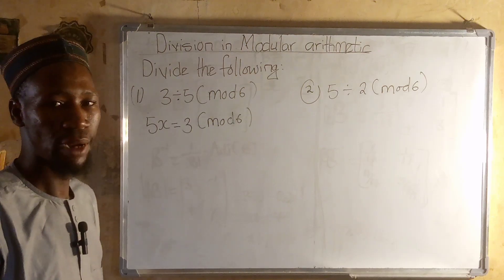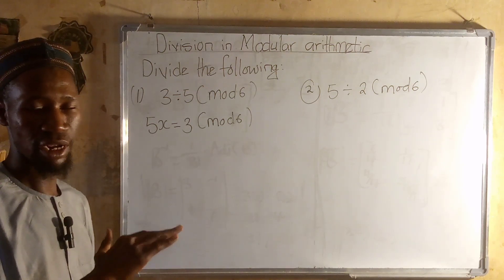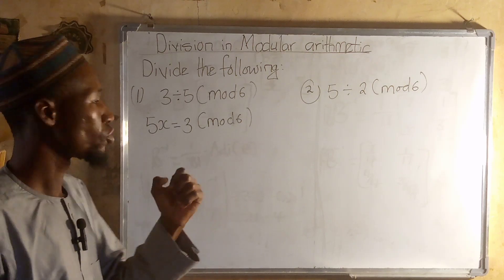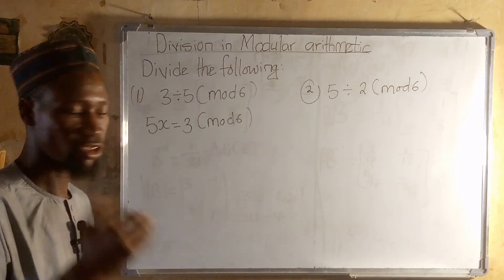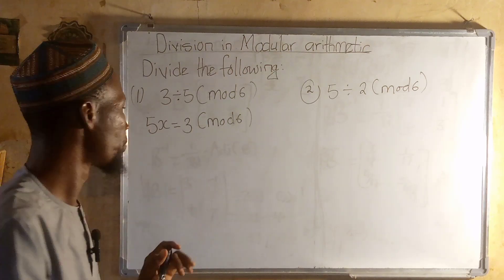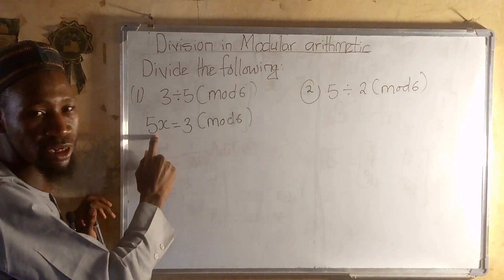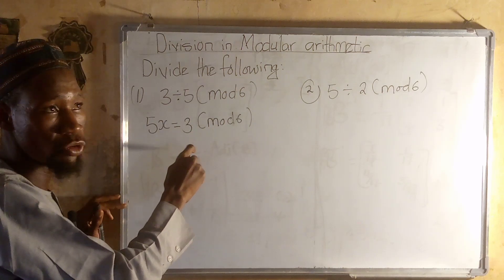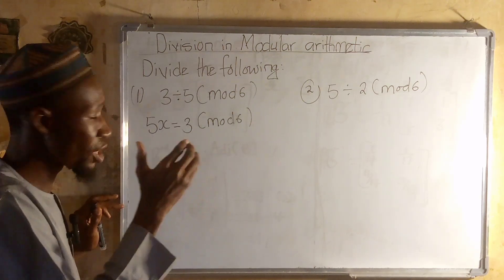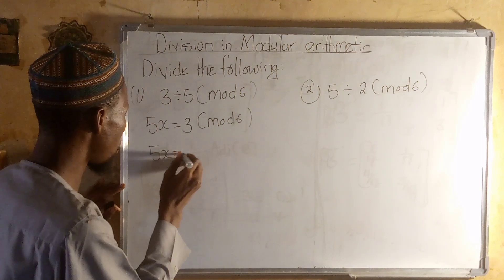We take multiples of 6. We're looking for multiples of 6 that when added to 3 will be divisible by 5. So 3 plus 6 is 9, divided by 5 doesn't work. 3 plus 12 is 15, 15 divided by 5 equals 3.